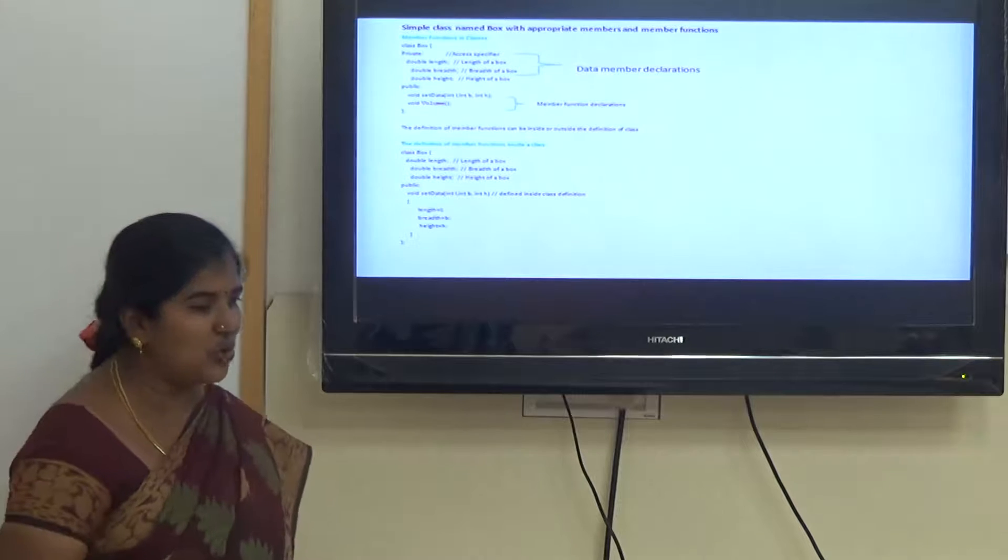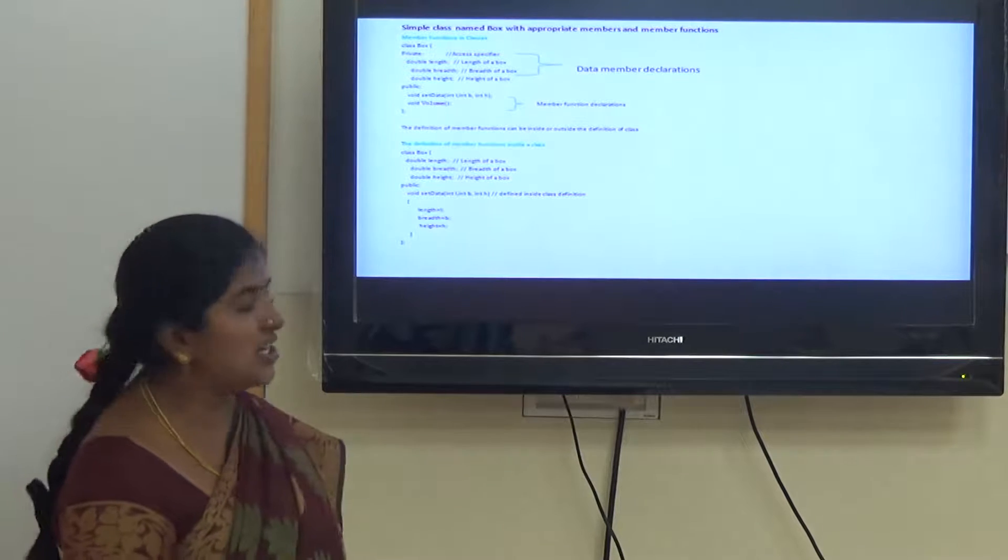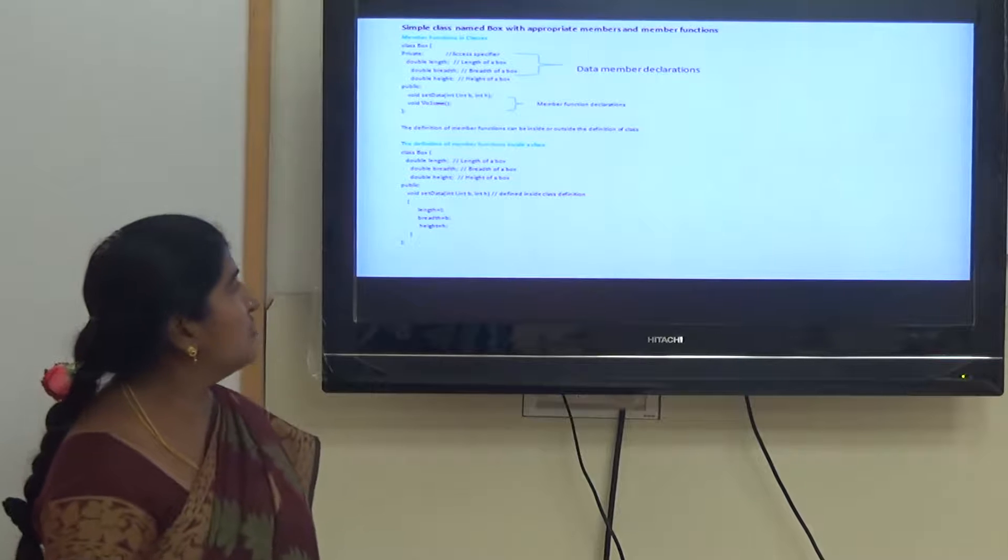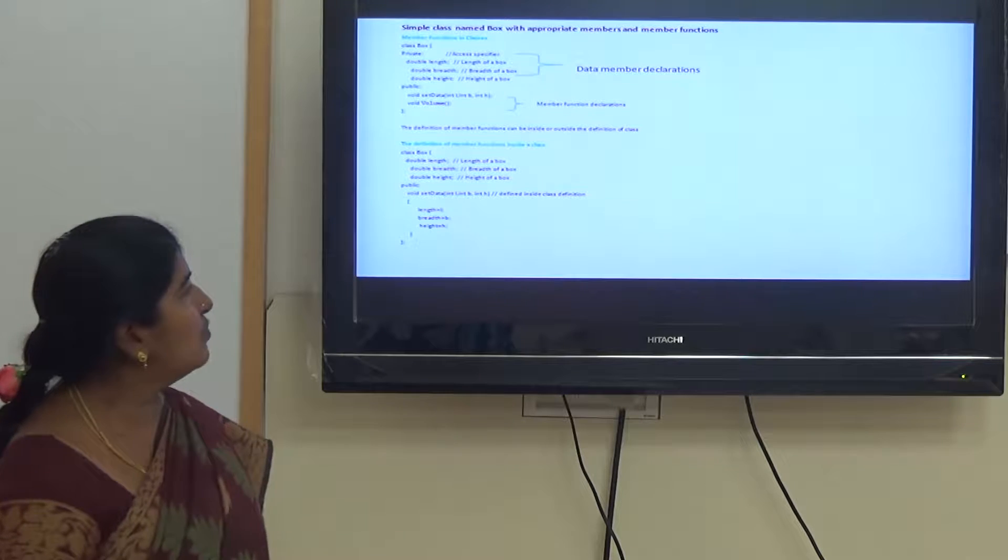This is an example of a simple class definition. The class box contains three attributes: length, breadth, and height. Two behaviors, that is functions: set data and volume.